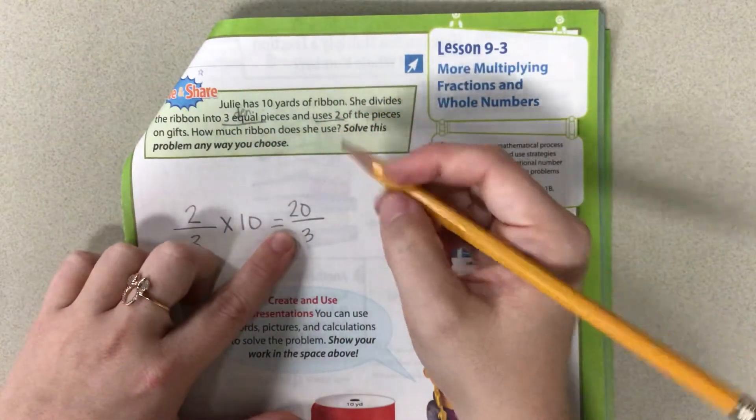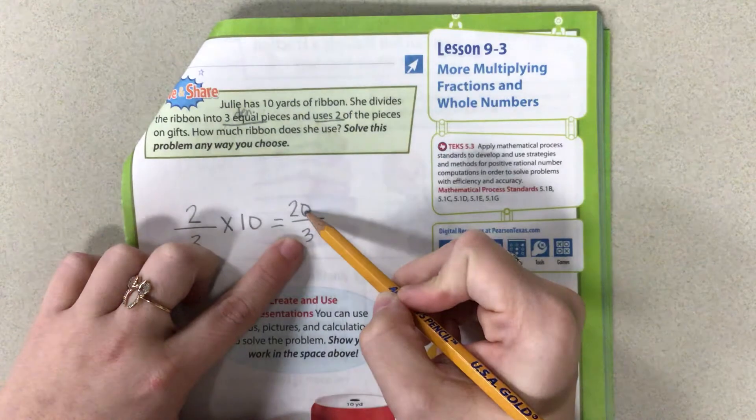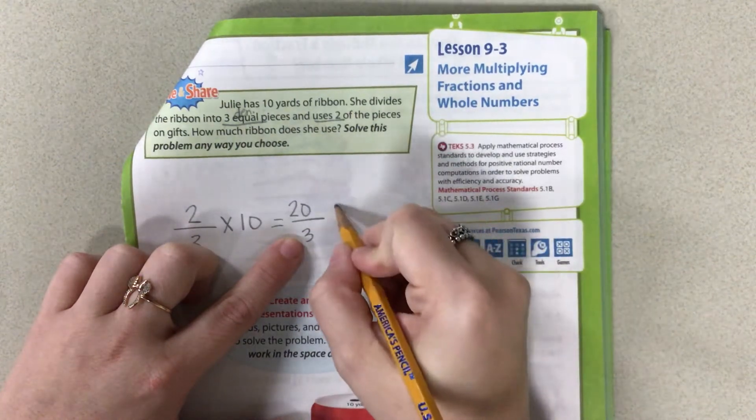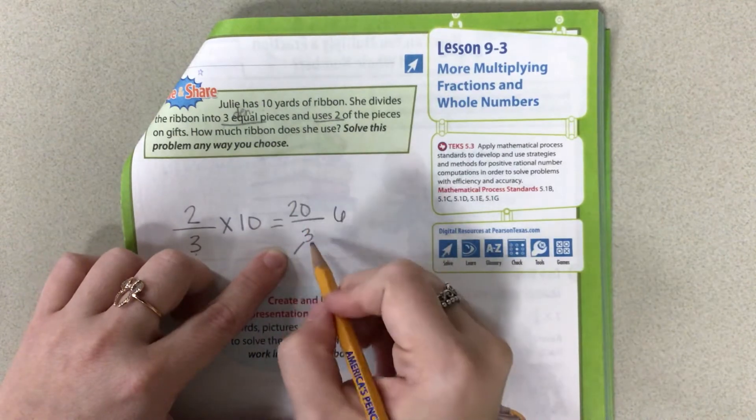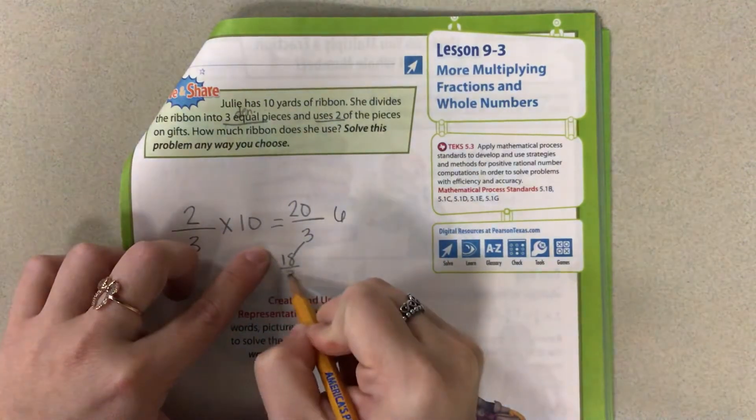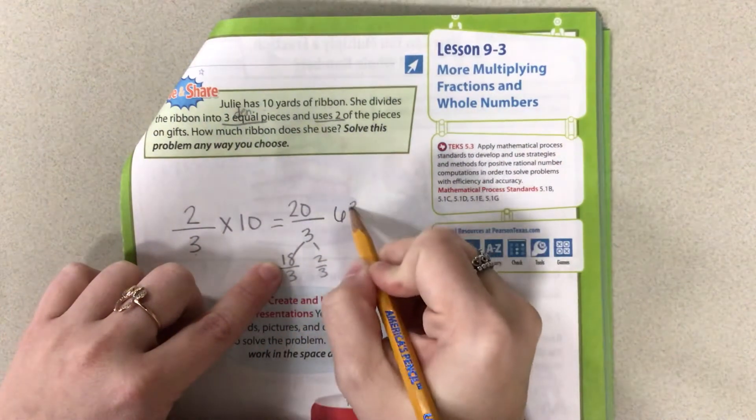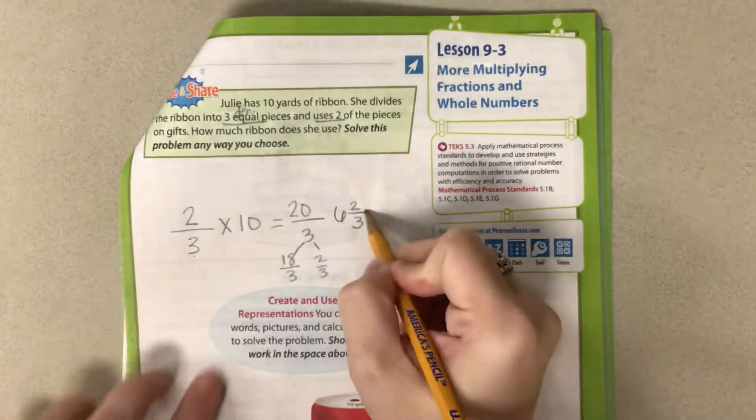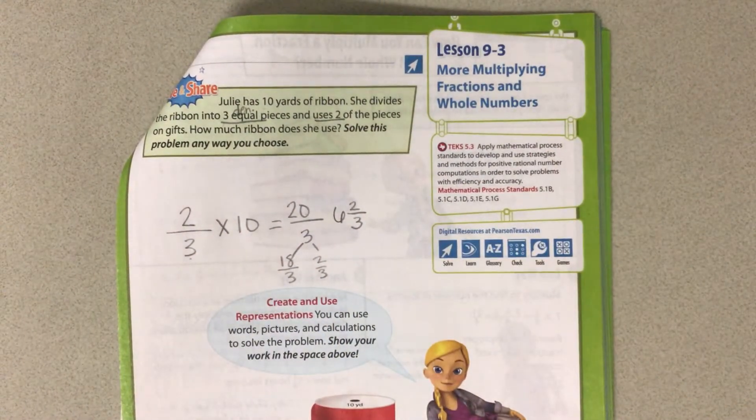So we can say, how many times does 3 go into 20? Well, 21 would be 7. So we know it goes in there six times. So we have 6 times 3 is 18 thirds. So how many does that leave me with? 2 thirds.